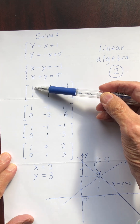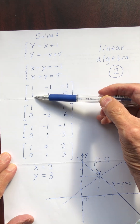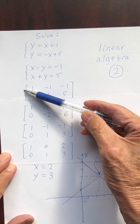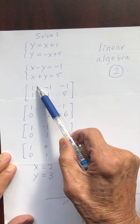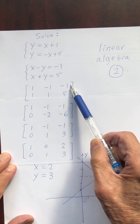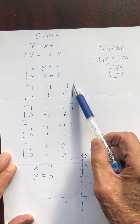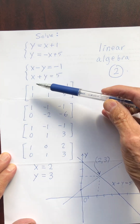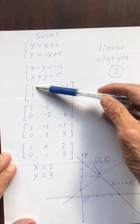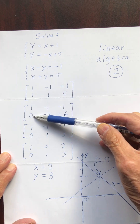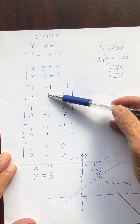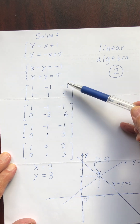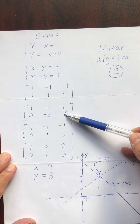I subtract these two equations. First, I copy the first row: 1, negative 1, negative 1. Then I subtract: 1 minus 1 is 0, negative 1 minus 1 is negative 2, negative 1 minus 5 is negative 6.